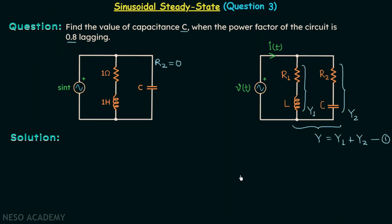We will first focus on the calculation of Y1, then Y2, and finally Y. Y1 is equal to the inverse of the impedance offered by this branch. Let's say the impedance is Z1, so Y1 is equal to 1 over Z1, and Z1 is equal to R1 plus jXL.